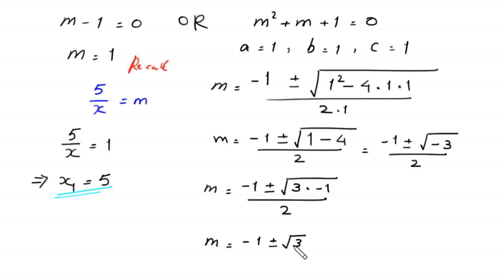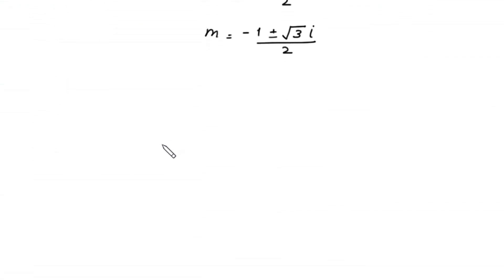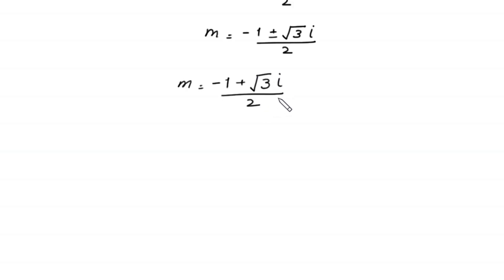So m equals negative 1 plus or minus square root of 1 minus 4, divided by 2, which equals negative 1 plus or minus square root of negative 3, divided by 2. We write negative 3 as 3 times negative 1, giving negative 1 plus or minus square root of 3 times square root of negative 1, divided by 2. Since square root of negative 1 equals i, we get m equals negative 1 plus or minus square root of 3 times i, divided by 2.